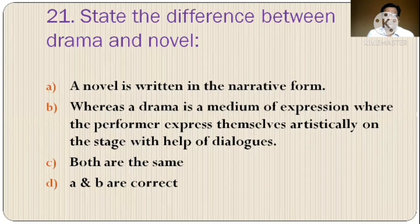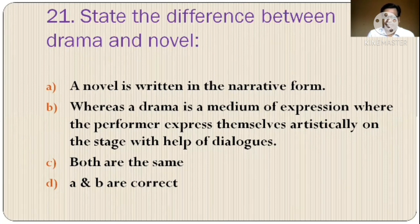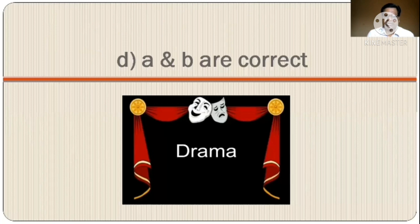Question 21: State the difference between drama and novel. The options are: A) novel is written in narrative form, B) whereas a drama is a medium of expression where the performer expresses themselves artistically on the stage with the help of dialogues, C) both are the same, D) A and B are correct. The correct option is option D, A and B are correct.